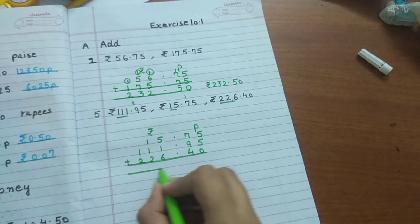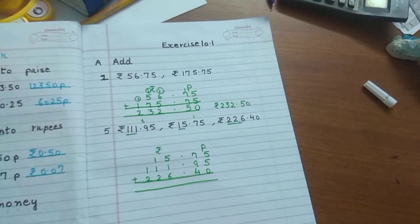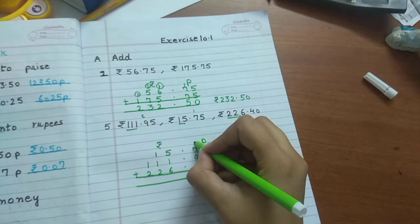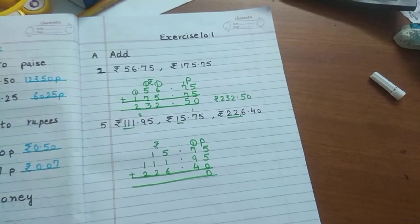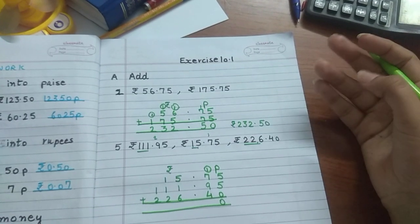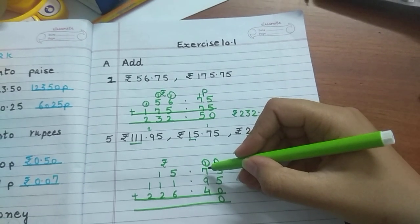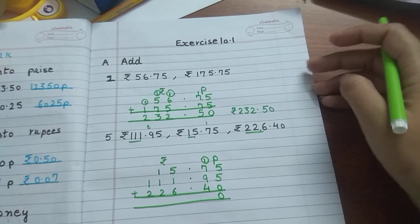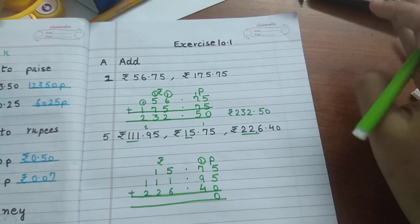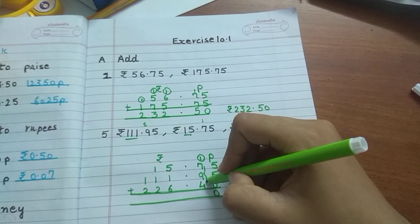Start adding. 5 plus 5. 5 in the mind, open 5 fingers and count: 6, 7, 8, 9, 10. 10 plus 0 is 10. So 1 above, 0 down. 10 cannot sit here. 1 will go up, 0 will stay down. Now 7 in the mind, open 9 fingers and count after 7: 8, 9, 10, 11, 12, 13, 14, 15, 16. 16 plus 4 is 17, 18, 19, 20.